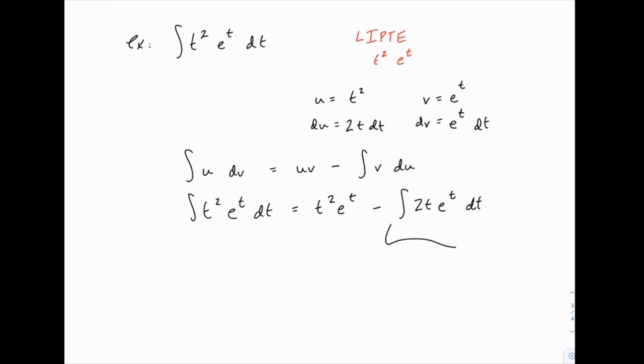So rather than taking this problem off on the side and doing it by itself, I like to keep everything in this same line here. So we'll do another integration by parts where we have u. Again, u is going to be the part with t and dv is going to be e to the t dt.